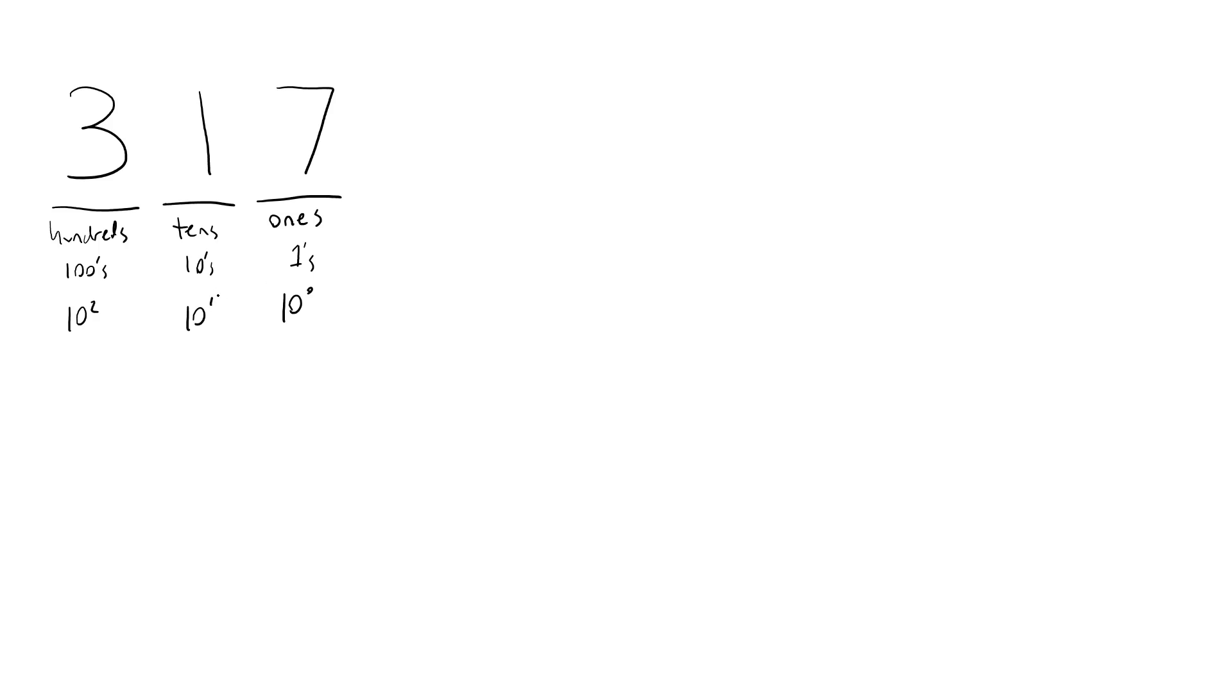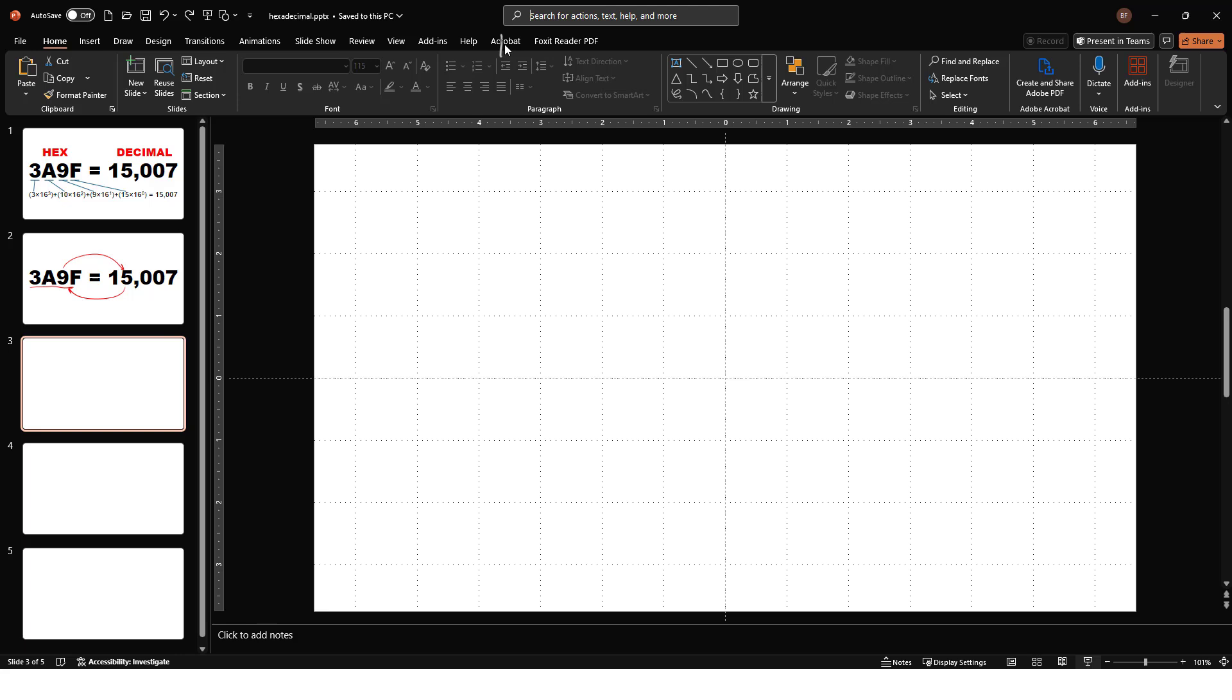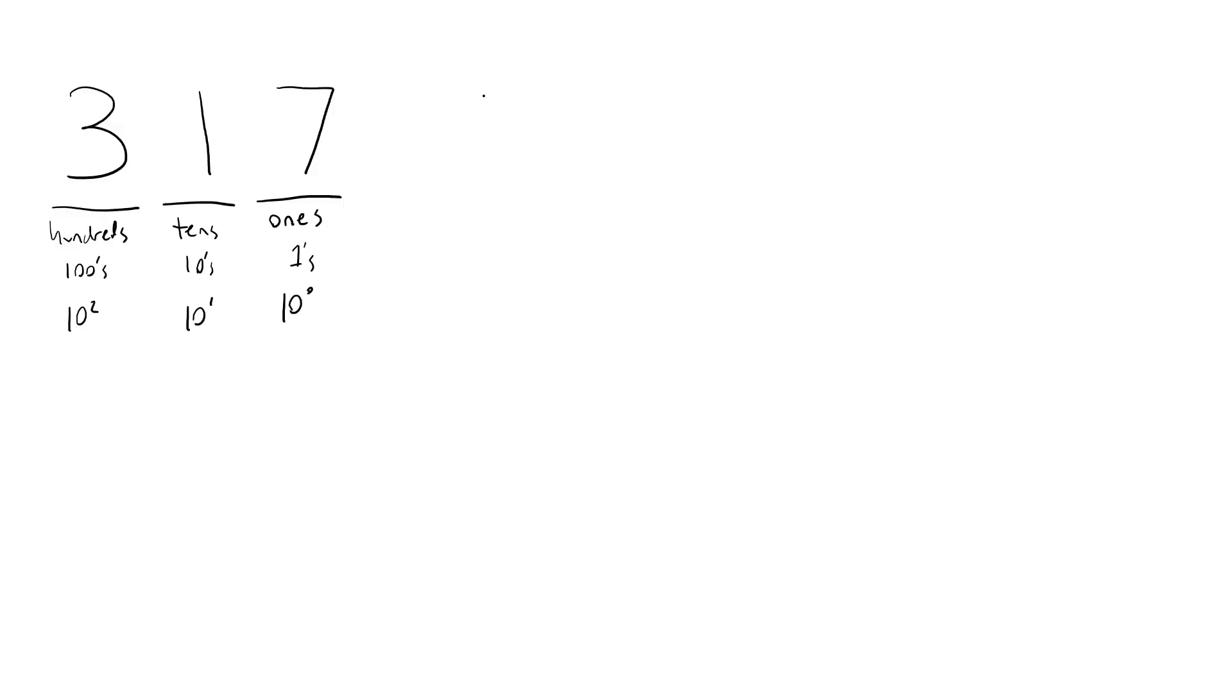So as sort of an aside there, really, exponents are probably a topic for a different video, but a number to an exponent means how many times you multiply that number by itself. So 10 squared means 10 times 10, which equals 100. And you might think, oh, 10 to the zero should be zero, 10 to the zero is actually one, it's a weird topic for a different video. Anything to the zero is equal one. So there we have each digit here represents a power of 10.